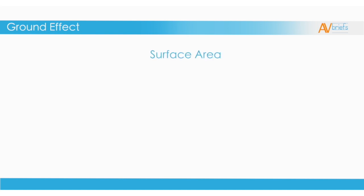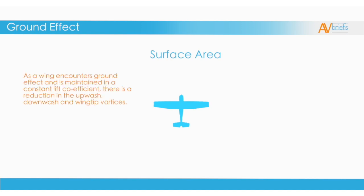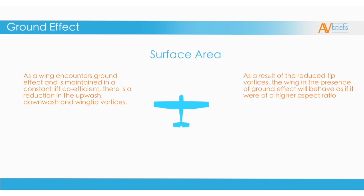The last thing to look at is the surface area of the wing. As a wing encounters ground effect and is maintained at a constant lift coefficient — meaning no change is made to the angle of attack and airspeed — there is a reduction in upwash, downwash, and wingtip vortices. As a result of the reduced tip vortices, the wing in the presence of ground effect will behave as if it were of a higher aspect ratio. The aspect ratio refers to the length times width of the wings, so the wings theoretically act more like a glider with a longer width.